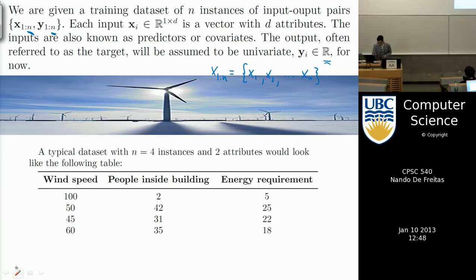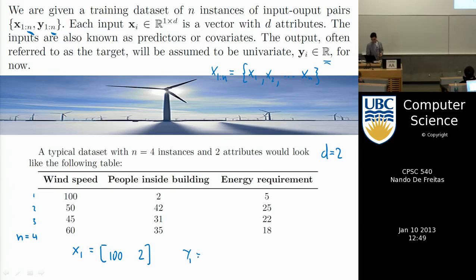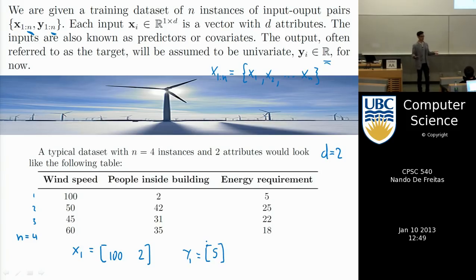In this example, N equals 4 (four data collections) and D equals 2 (two inputs). The vector x_1 in 2D would be [1, 0, 2] — a two-component vector with the two inputs. The corresponding label y is a scalar representing the energy requirement to keep this room at a reasonable temperature.